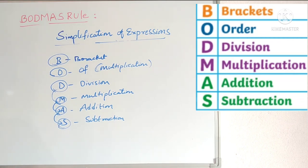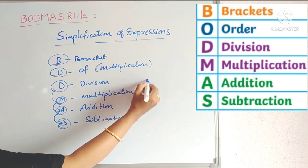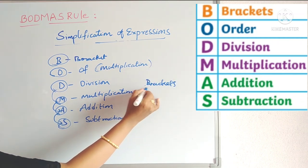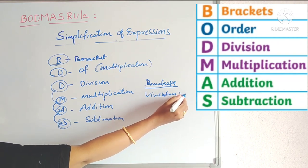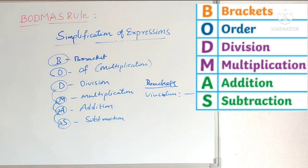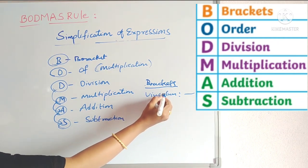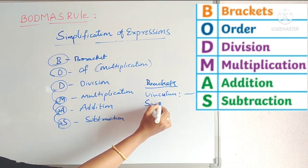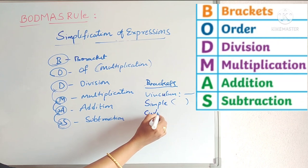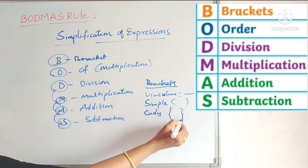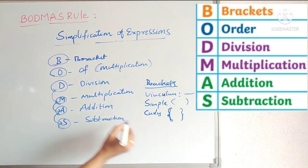This order we have to follow. Now brackets are also of four types. The first one is Vinculum, which we generally read as 'bar'. First of all we have to simplify the vinculum. Next are simple brackets, then curly brackets, and then square brackets.